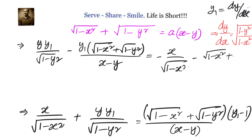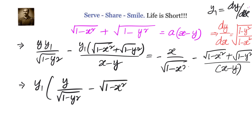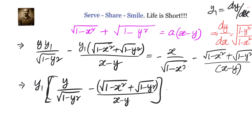Take y1 common on the left hand side. We write y1 times [y over √(1 minus y²) minus (√(1 minus x²) plus √(1 minus y²)) divided by (x minus y)] equals minus x over √(1 minus x²) minus (√(1 minus x²) plus √(1 minus y²)) divided by (x minus y).